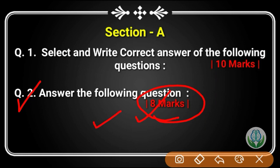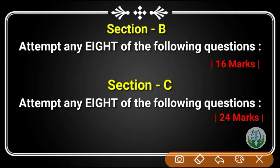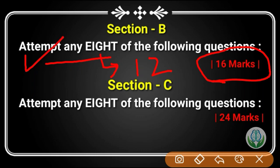Section B has 16 marks in total with 8 questions from which you have to attempt any 8. Each question is 2 marks. These questions come from the textbook exercises.